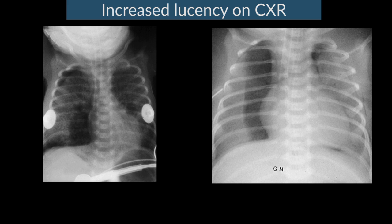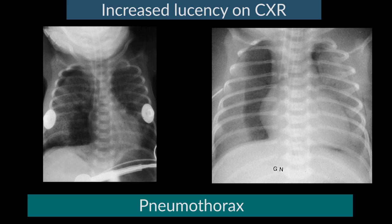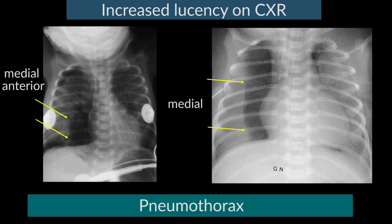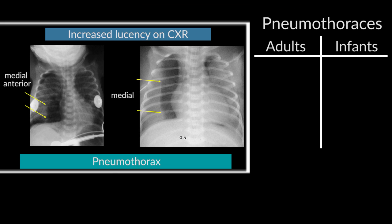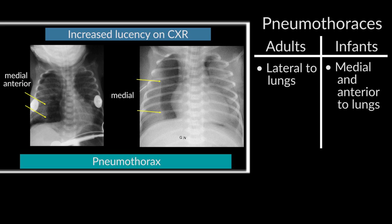Here are two other conditions where the hemithorax can look much more lucent. Both of these infants have a pneumothorax. The infant on the left side of the screen has a medial and anterior pneumothorax, and the infant on the right has primarily a medial pneumothorax. Unlike adults, where the pneumothorax occurs more laterally, infants tend to collect pleural air in the medial and anterior location because they are almost always in supine position and the lungs are relatively stiff, allowing them only to fall backwards rather than recoil toward the mediastinum.